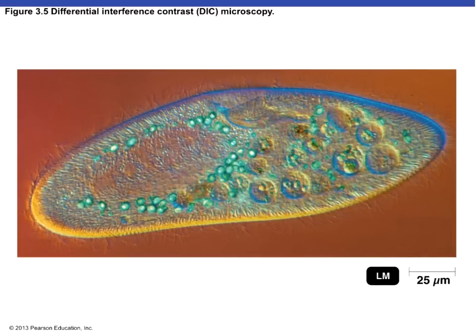Here we have a picture of a paramecium using DIC microscopy, and we're able to see large vacuoles and identify structures in the foreground versus the background, because of those two beams of light.